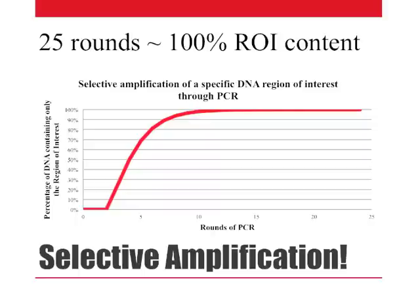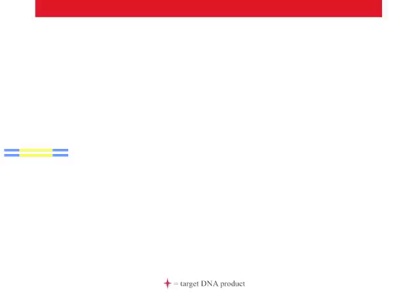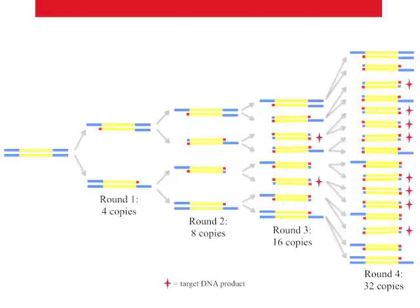Now let's consider another important graph. If you were to graph the number of copies obtained as a function of the number of rounds of PCR performed, you would obtain an exponential curve. PCR leads to the exponential amplification of the region of interest. After just 25 rounds, we will have over 33 million copies of our region. Hopefully, you now understand both the technique and the theory of the polymerase chain reaction, an important foundation in modern molecular biology.